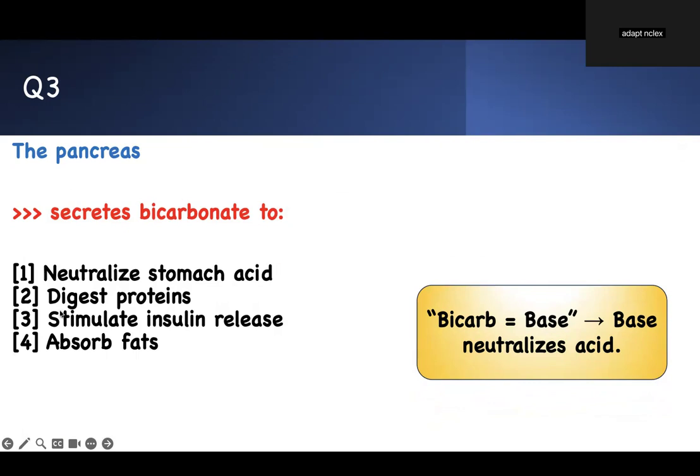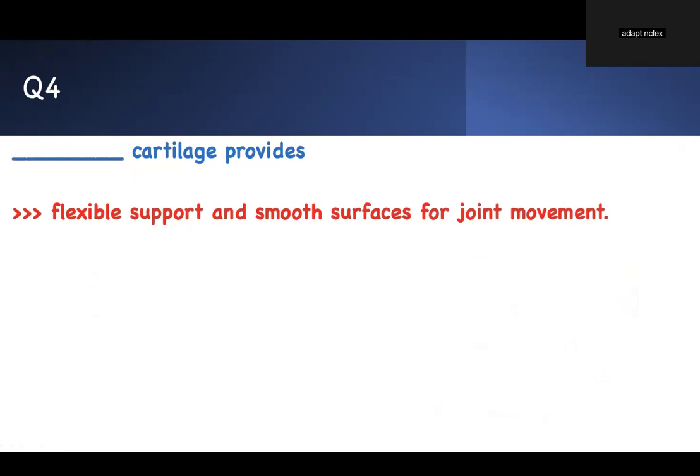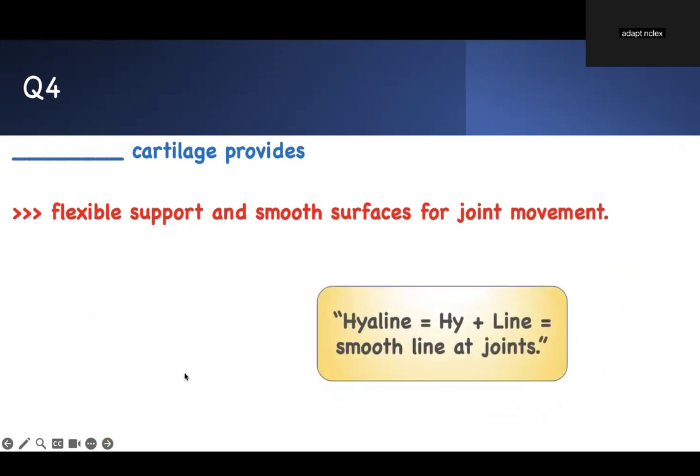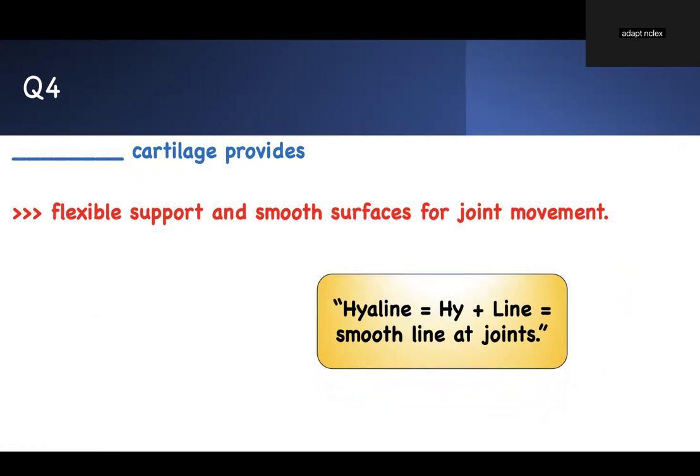These are concepts I want you to master for your TEAS exams regarding anatomy and physiology and practice questions when you're doing them. Next one. Flexible support and smooth surface for joint movement. The keyword is support and smooth. The concept and the mnemonic is island. Island is hairline. Hairline is usually smooth line at the joint. Hairline is a smooth line at the joint. Therefore, this has to be hyaline cartilage.